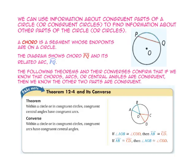Theorem 12-4 states that within a circle or in congruent circles, congruent central angles have congruent arcs. So, if we know that angle AOB is congruent to angle COD, then arc AB is congruent to arc CD. Its converse states that within a circle or in congruent circles, congruent arcs have congruent central angles.